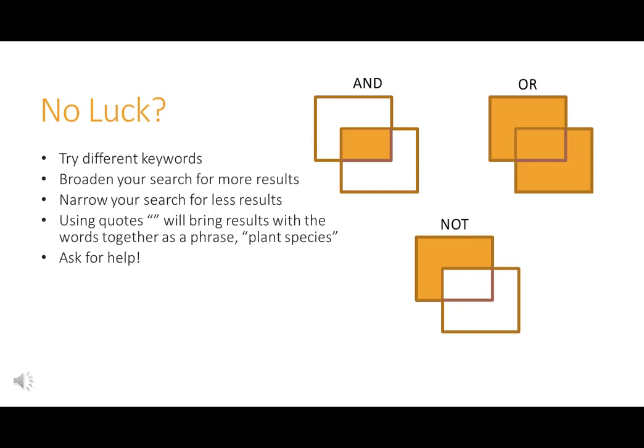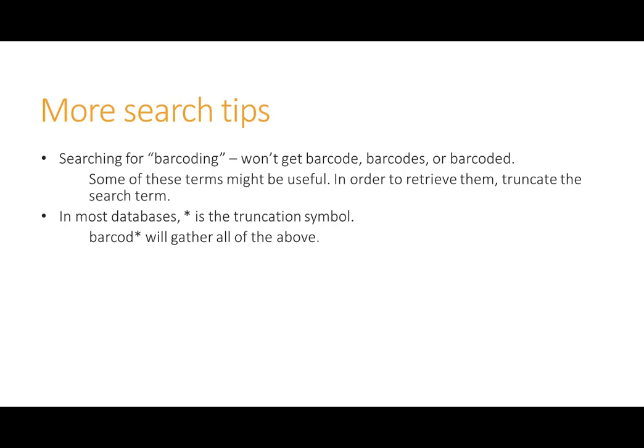Ask for help. Here are some other tips that might help you search. When searching for barcoding, you will not get results that include barcode, barcodes, or barcoded. Some of these terms might be useful. In order to retrieve them, use truncation. In most databases, the asterisk is the truncation symbol. Barcode* will gather all of the above. Be careful when using truncation — if interested in articles about cats and you search cat*, you will retrieve articles about cats, but also articles about catapults, catalysts, or cathedrals, among others.